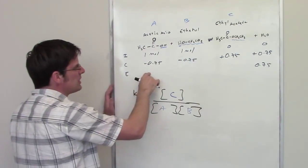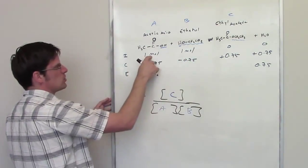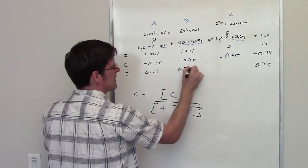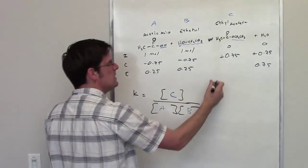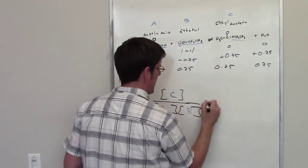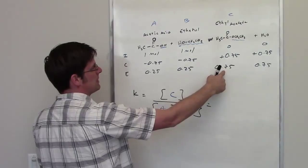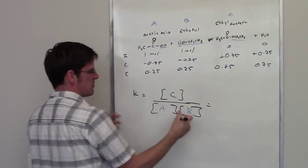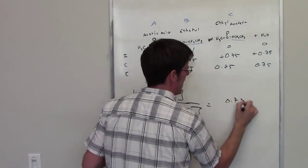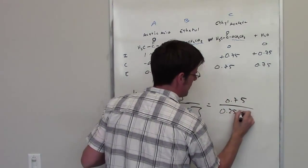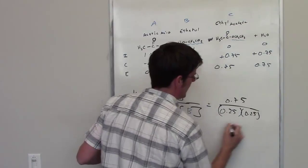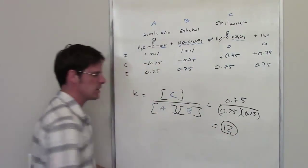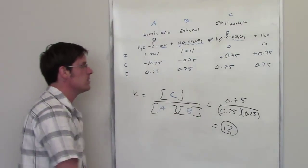So I easily fill in the equilibrium concentrations. 1 minus 0.75 is 0.25. 1 minus 0.75 is 0.25 and 0 plus 0.75 is 0.75. So I just throw, this is the equilibrium concentration or a map of C, this is the same for B and this is the same for A. I throw those into here, I get 0.75 divided by 0.25 times 0.25. Now, I did that on my calculator earlier and the number that I ended up getting was 12.